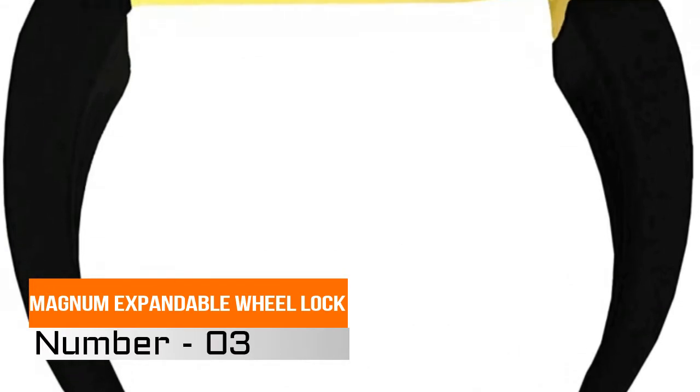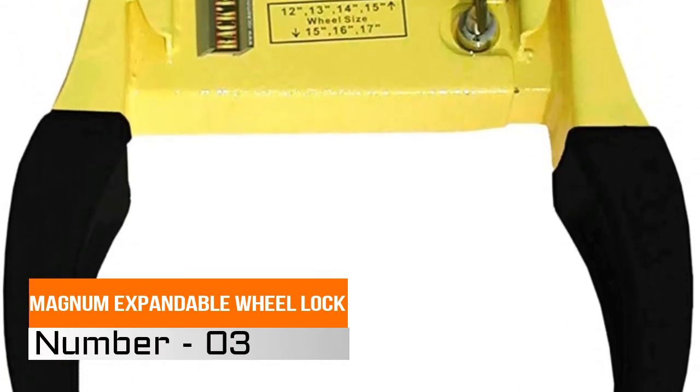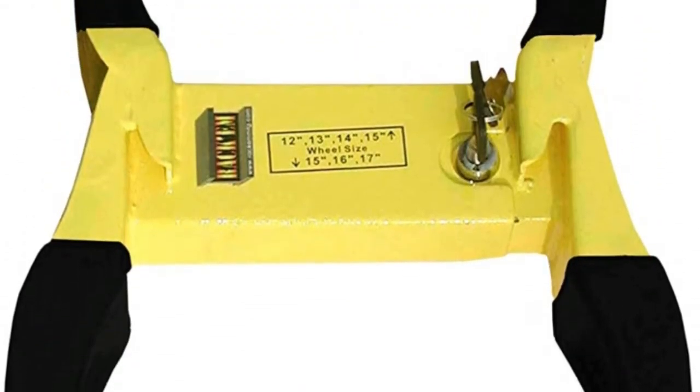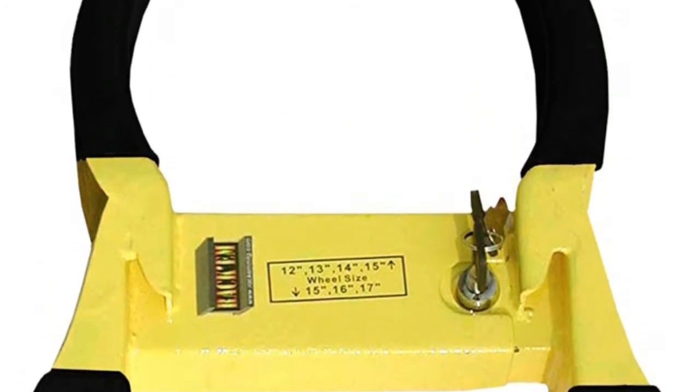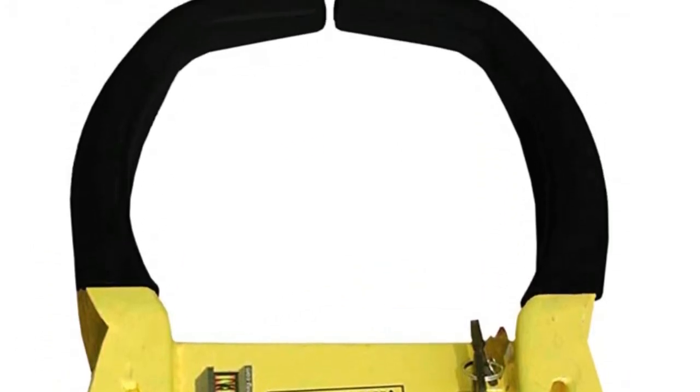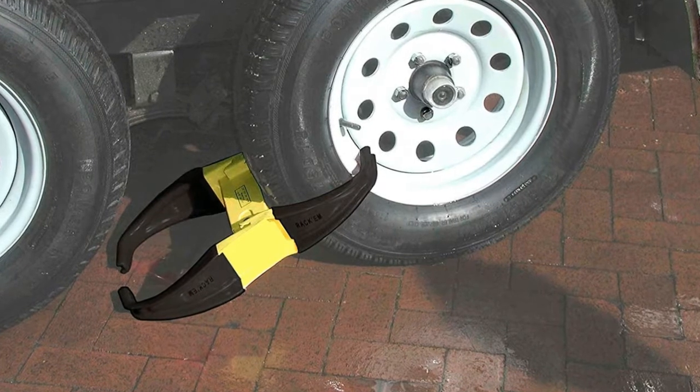Number 3, Magnum Expandable Wheel Lock. Quick easy-to-use lock leaves your truck, trailer, etc. unable to roll. Highly visible lock instantly puts a kink in any thief's intentions.